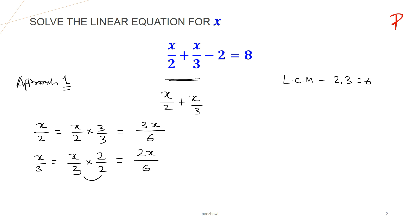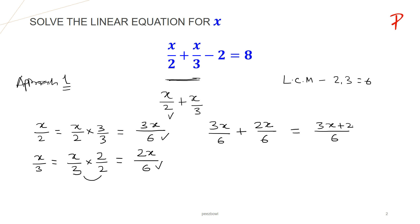So now it is very easy to add x upon 2 plus x upon 3. For x upon 2 we can write 3x upon 6, and for x upon 3 we can write 2x upon 6. Now this is simple to add: at the denominator we have 6, and at the numerator we have 3x plus 2x. And 3 plus 2 is 5, so the sum of x upon 2 plus x upon 3 is 5x upon 6.